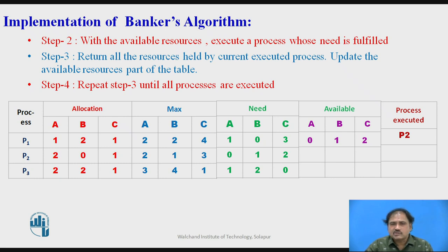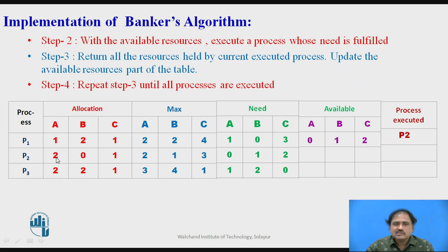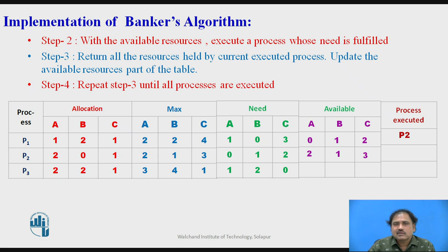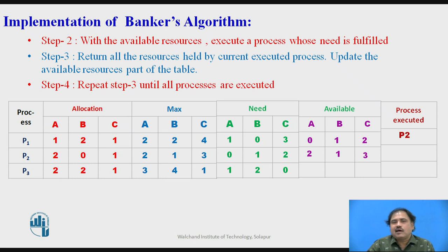We execute process P2. When P2 gets executed, it returns all its allocated resources back to the operating system. Adding those returned resources to the available pool: under A we get 0 plus 2 which gives 2, B remains 1, and P2 returns 1 C resource so total C becomes 3. The updated available resources are now 2, 1, 3.